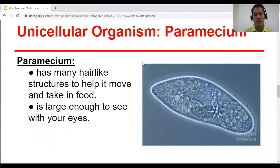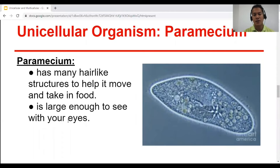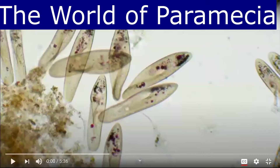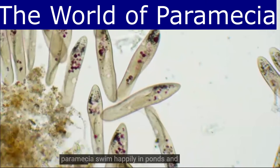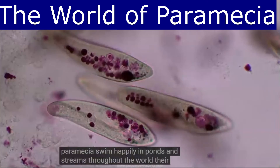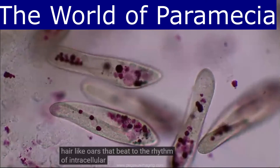Next is paramecia. Paramecia look like this — they have many hair-like structures called cilia, which help them move and take in food. The cilia actually paddle the entire structure for movement. Paramecia are large enough to see with the naked eye. Paramecia swim in ponds and streams throughout the world, and their quick movements are produced by an army of hair-like cilia.